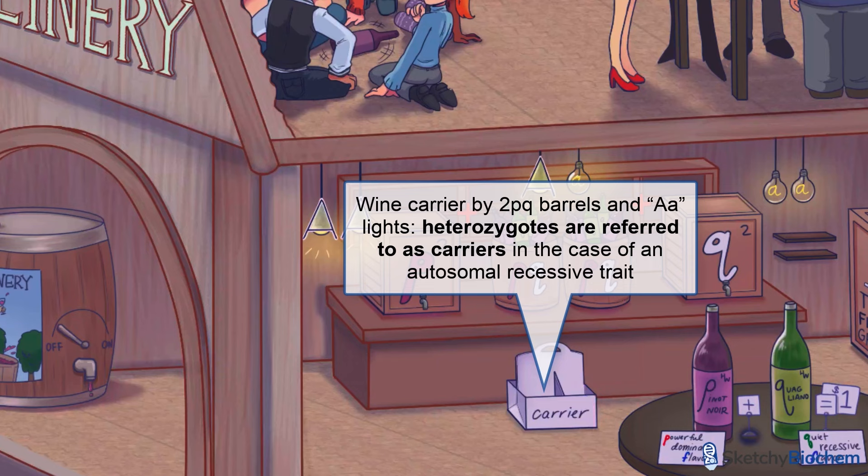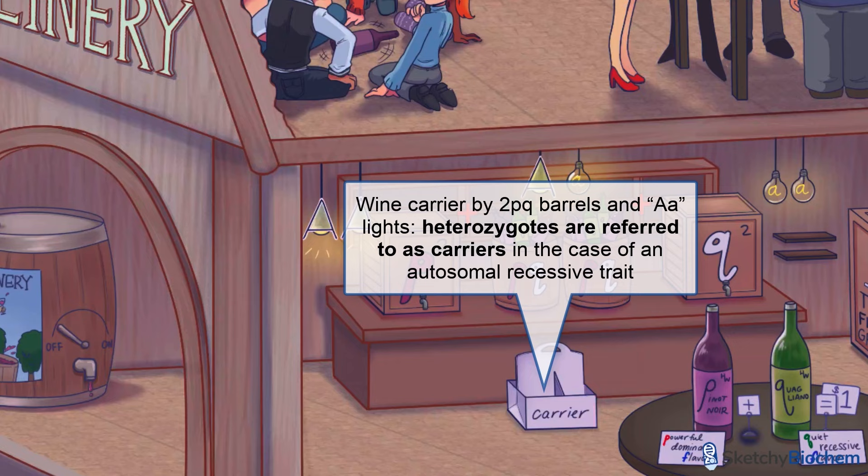If an individual is heterozygous for a trait that's autosomal recessive, that individual is considered a carrier — hence this wine carrier underneath the heterozygous PQ barrels. Carrier status is really important when considering autosomal recessive diseases like cystic fibrosis or sickle cell anemia. But what if the trait isn't autosomal at all? What if the locus of a particular allele exists on the X chromosome — in other words, what if the trait is sex-linked?